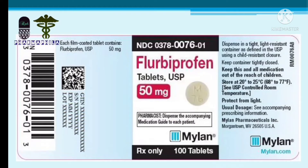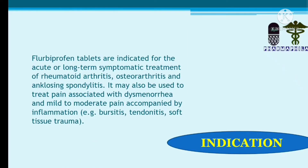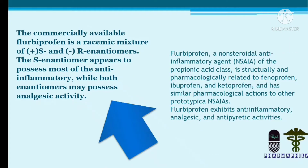Flurbiprofen is dispensed in a tight, light-resistant container as defined in the USP, using a child-resistant closure. The major indication is osteoarthritis, along with long-term symptomatic treatment of rheumatoid arthritis and ankylosing spondylitis. It may also be used to treat pain associated with dysmenorrhea and mild to moderate pain accompanied by inflammation.